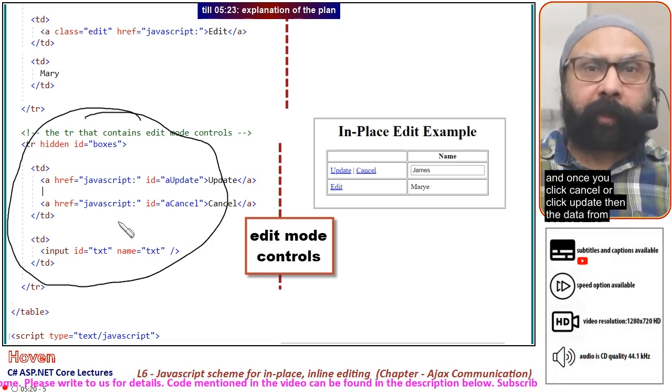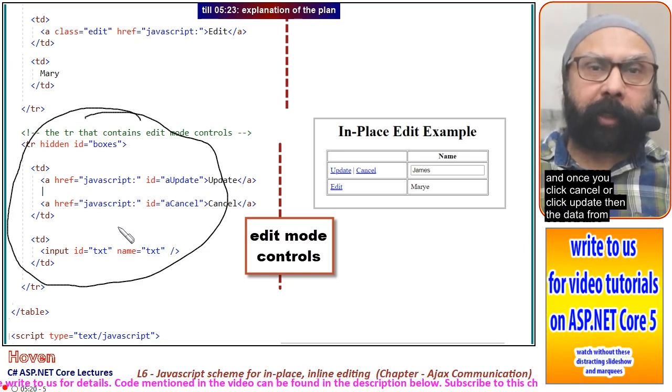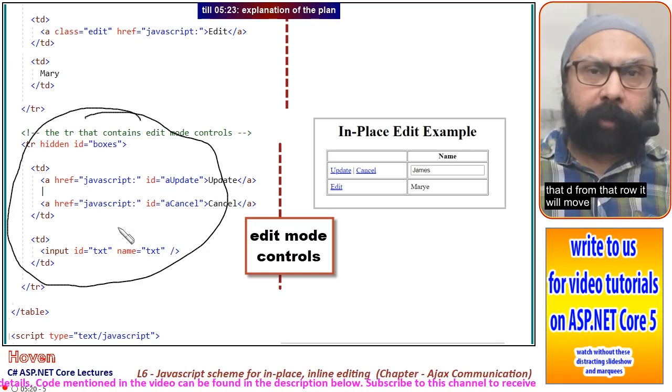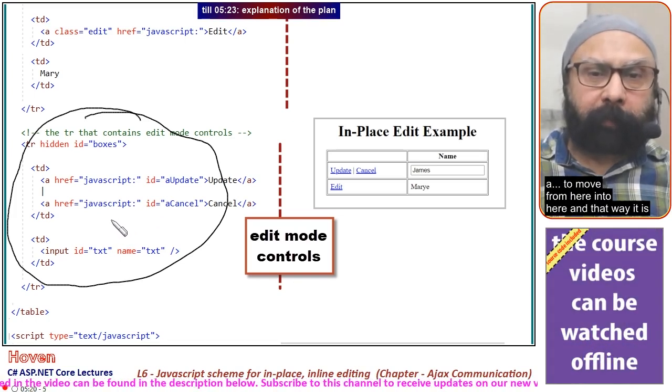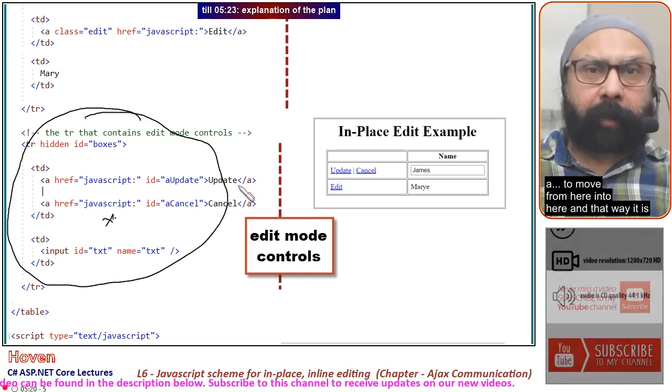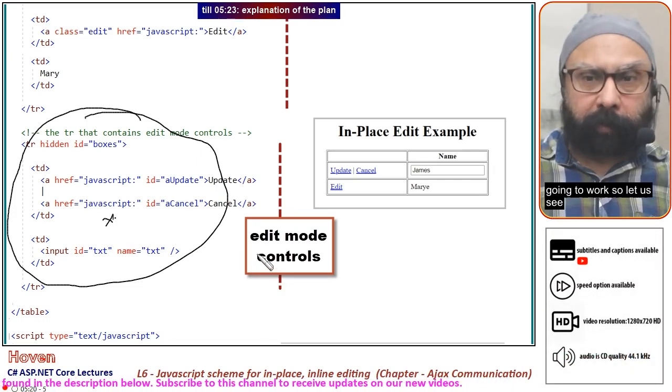Once you click cancel or update, the data from that row will move from here into there, and that's how it works. Let's see. This is the script, and I will explain.